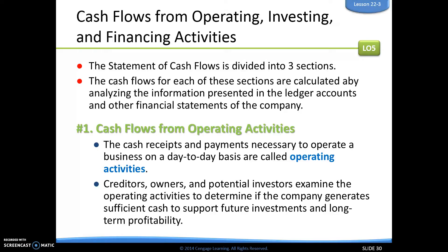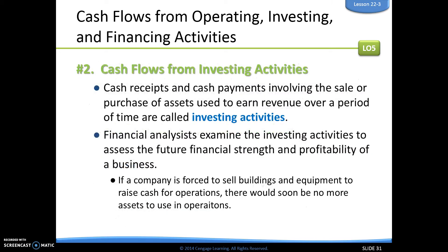Our first section is cash flows from operating activities, which looks at cash receipts and payments necessary to operate a business day to day. We examine operating activities to determine if our company makes enough cash to support future investments as well as long-term profitability. Our second section looks at investing activities — any time we make the sale or purchase of assets used to earn revenue over a period of time — to assess whether our company will be financially strong in the future.